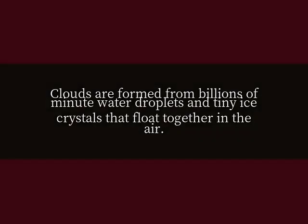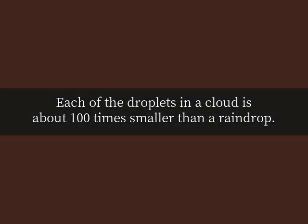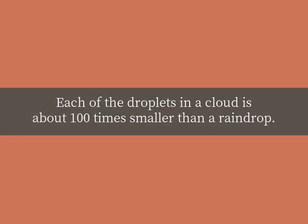What are clouds made of? Clouds are formed from billions of minute water droplets and tiny ice crystals that flow together in the air. Each of the droplets in a cloud is about 100 times smaller than a raindrop.